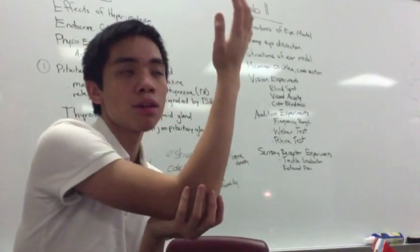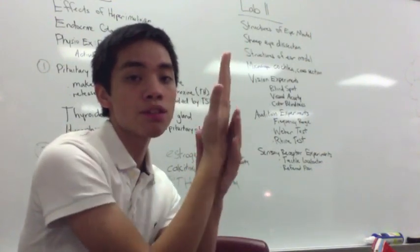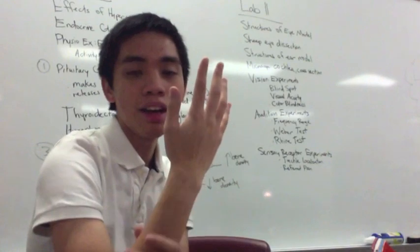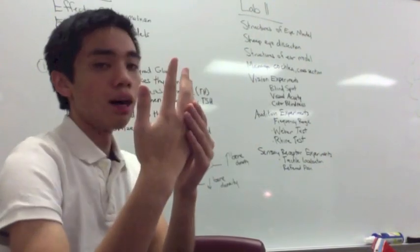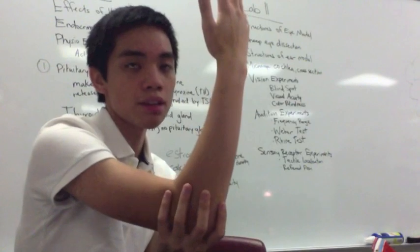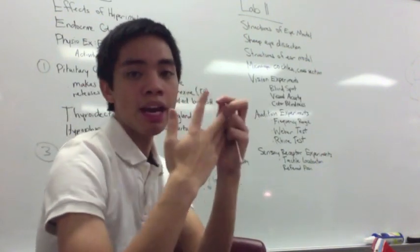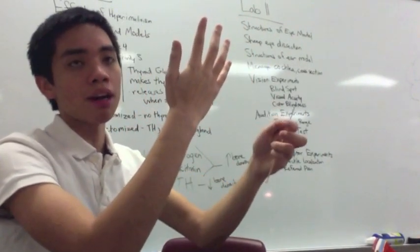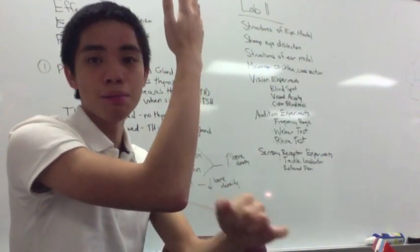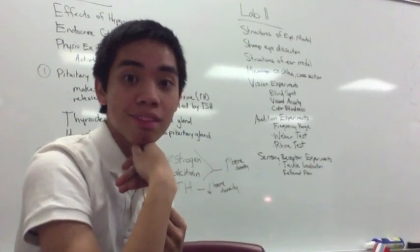Referred pain is when you put your elbow into a bucket of ice. The area becomes numb and then pain starts traveling from your elbow toward your fingers — specifically your pinkies — because it goes through your ulnar nerve. Referred pain means there is pain in an area other than where you are causing the pain. And that is Lab 11 — happy studying!